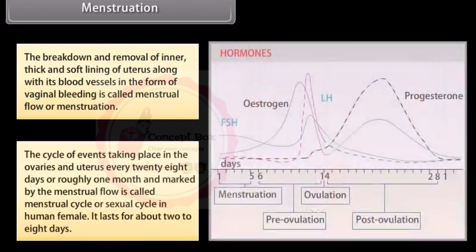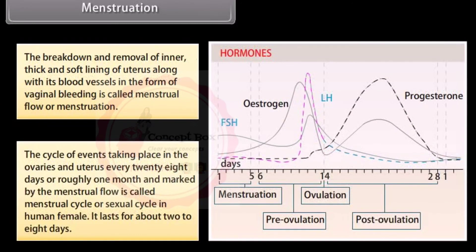The cycle of events taking place in the ovaries and uterus every 28 days, or roughly one month, marked by the menstrual flow, is called the menstrual cycle or sexual cycle. In human females, it lasts for about two to eight days.